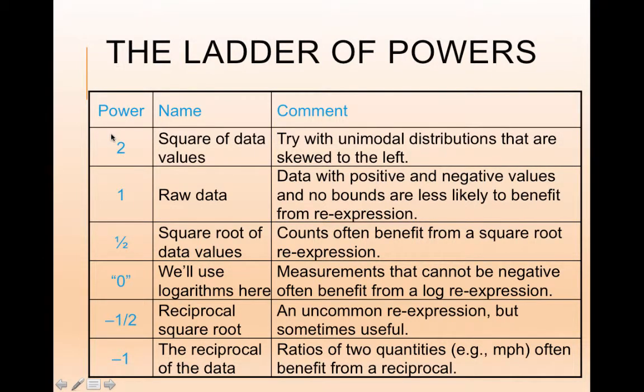We're always going to start by re-expressing our y variable. So a power of 2 means that would be y to the second power or y squared, which is why the name is a square of data values. This is often helpful when the data is unimodal and skewed to the left. If it's skewed to the left, that means the majority of the data are higher data values, and then you have some that are a bit smaller.